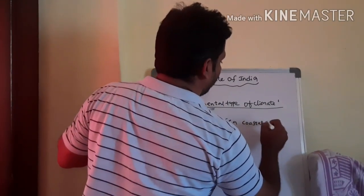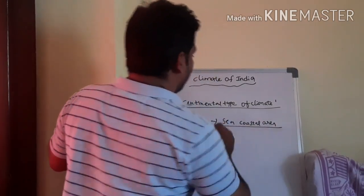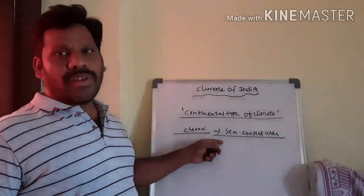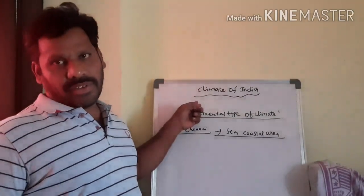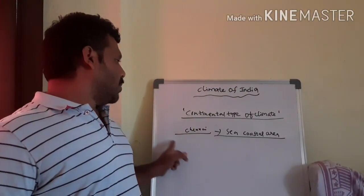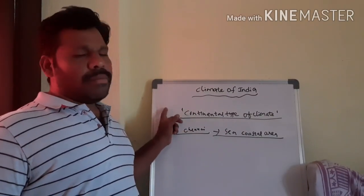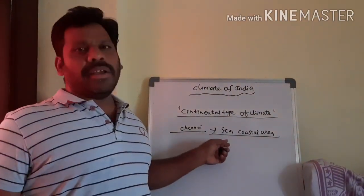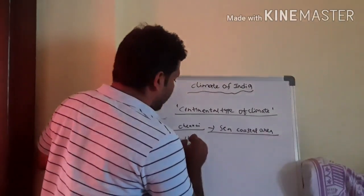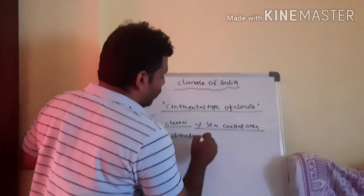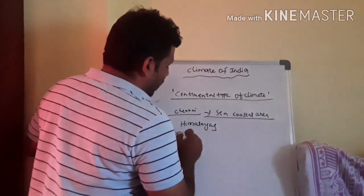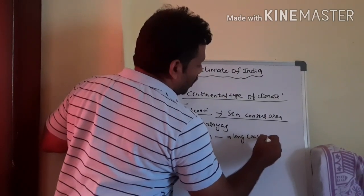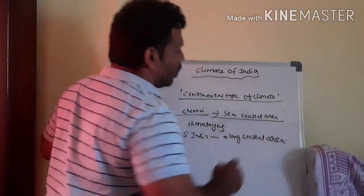If you observe, we find a very wide variation in temperature between day and night in Delhi, while in Chennai we can find very low variation. Chennai has low temperature variation because it is bounded by the sea coast. Delhi is not bounded by the sea coast. Also, North India is bounded by the Himalayas.